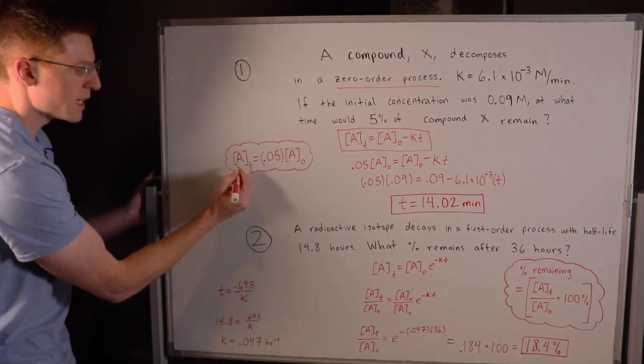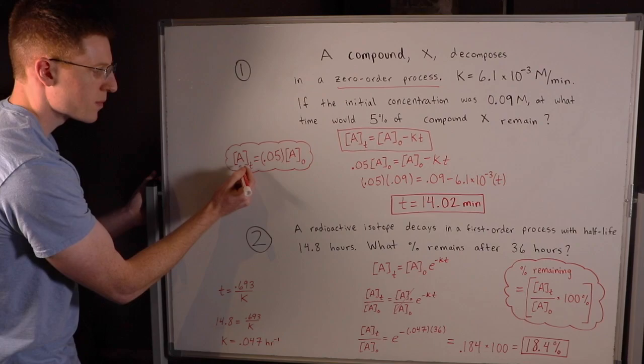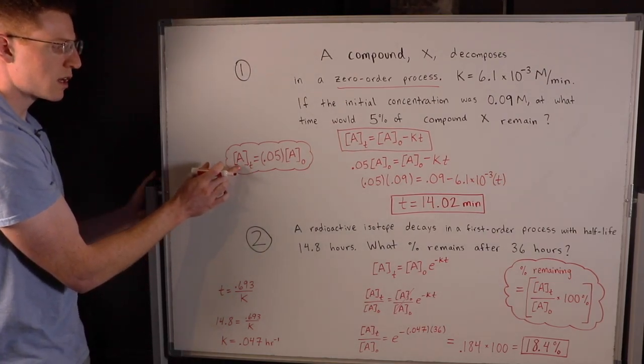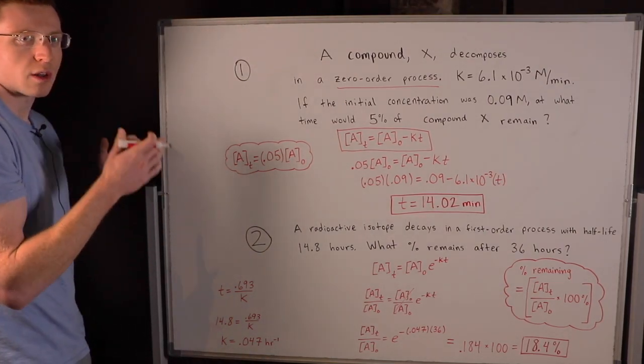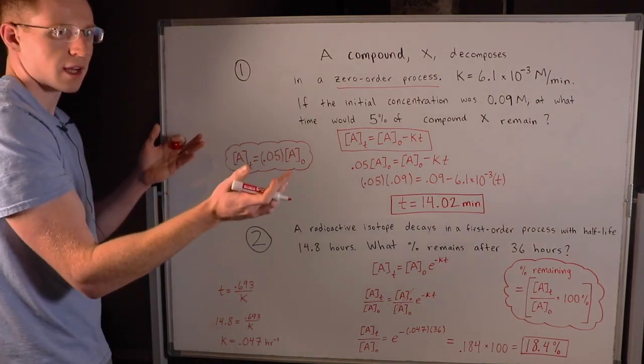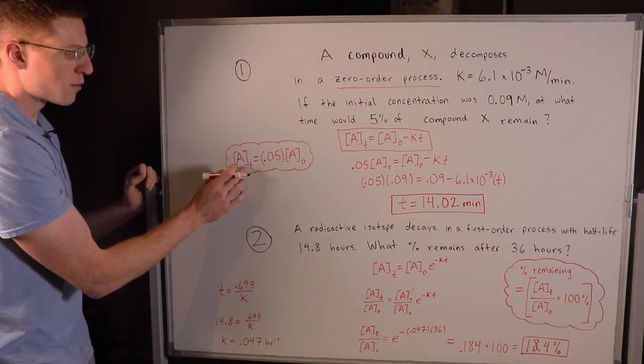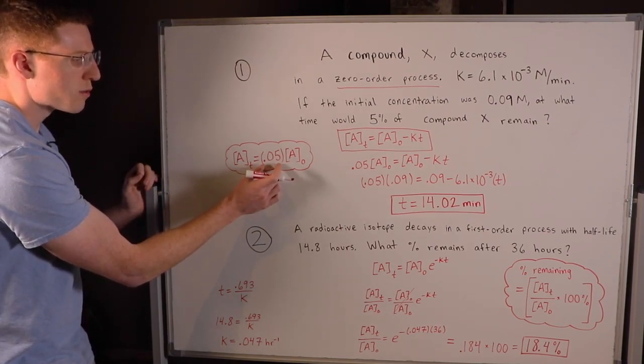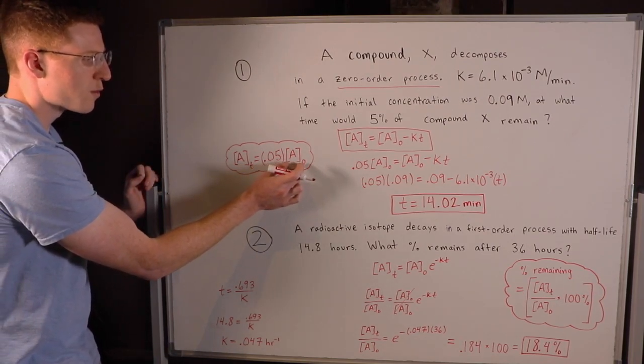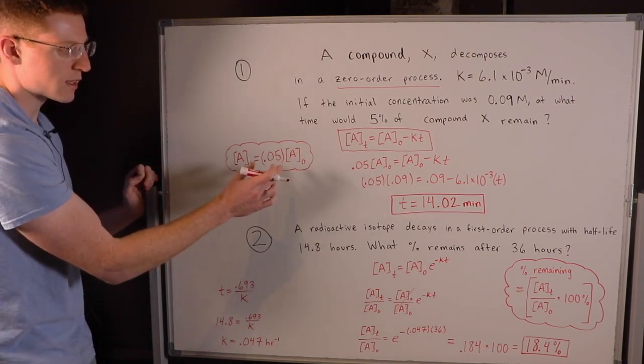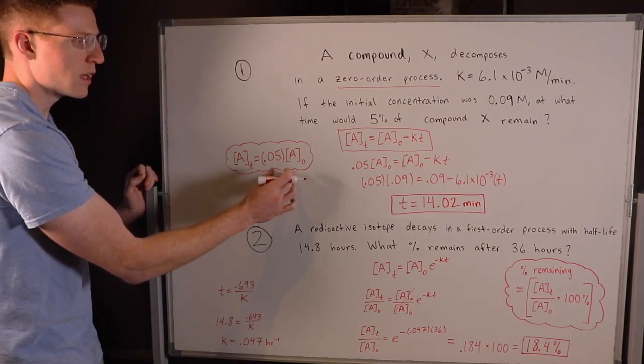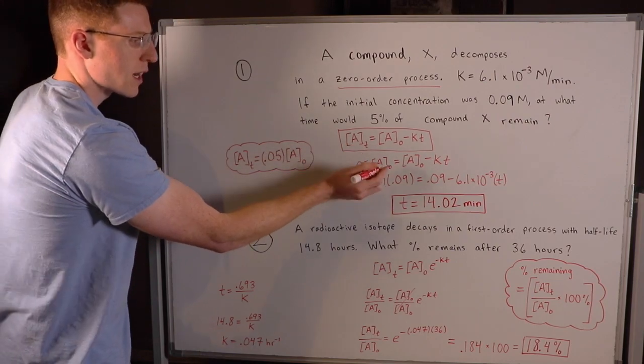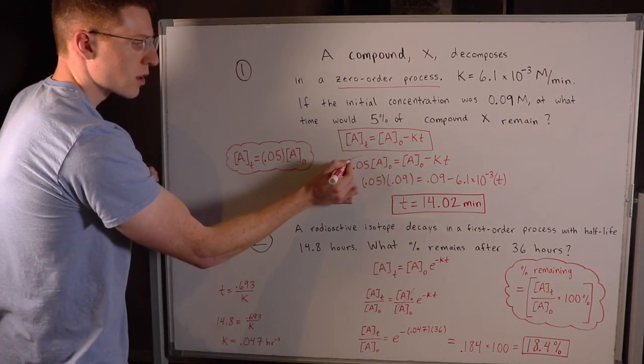The most important thing you have to derive yourself for this problem is that 5% of compound X remaining means this mathematically: the concentration of our reactant at time T is going to be equal to 5% of what it began as. That's what this means mathematically. So our concentration at time T is going to look like this.